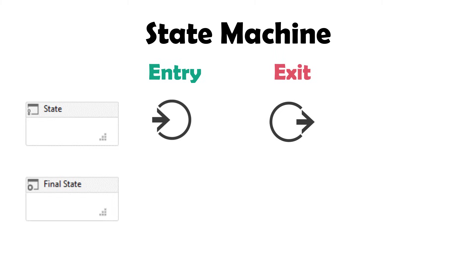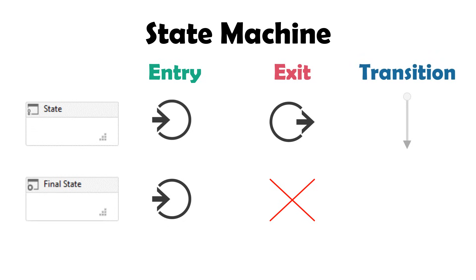The entry sector contains the activities to be executed once we enter the state. The exit sector contains activities to be executed once we leave the state — these activities are executed after the entry sector activities. Final state contains only an entry sector, because this state is placed at the end of the process and we don't have any states after it. States also have transitions to move from one state to another. Only regular states have transitions; final states don't have transitions.